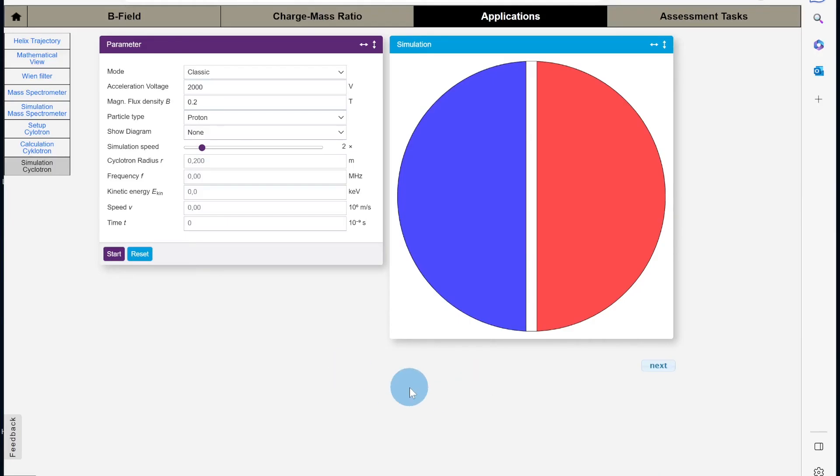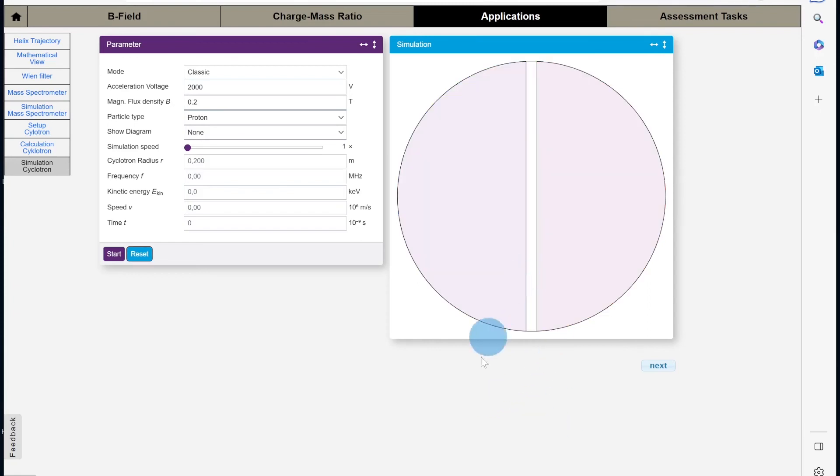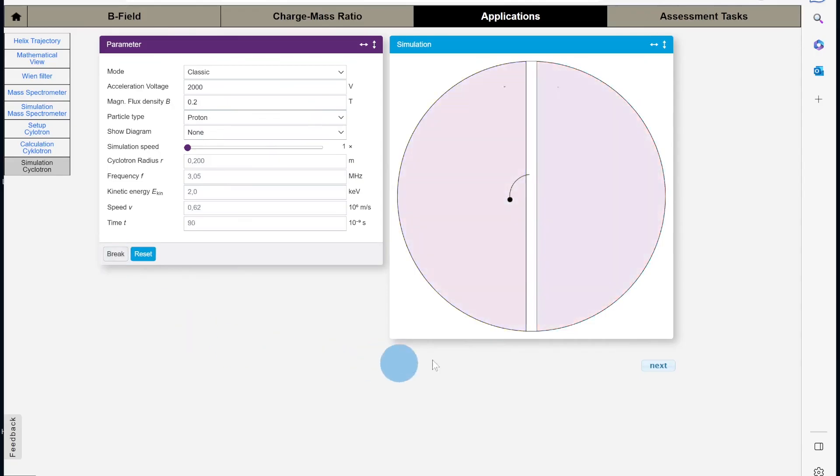Here's another simulation where we can look at how the high frequency alternating supply changes the polarity of the dees and causes the particles to accelerate across the gap between the dees. Here we're accelerating protons, so if I click start you'll see the polarity of the dees continually changing back and forth from positively charged to negatively charged.